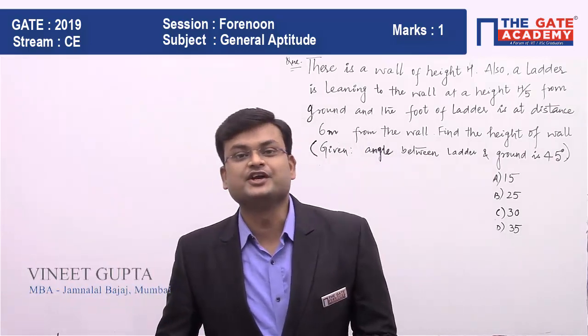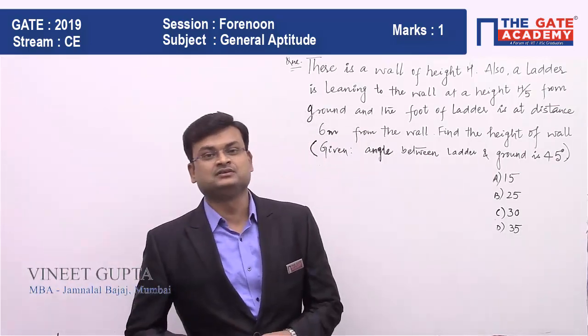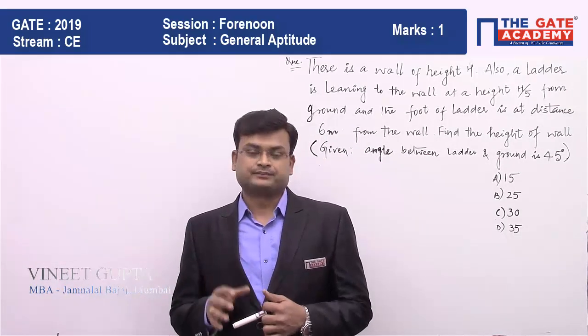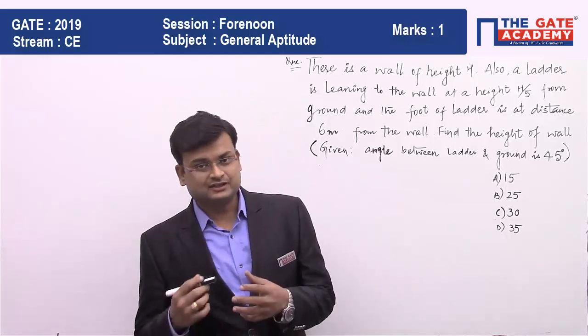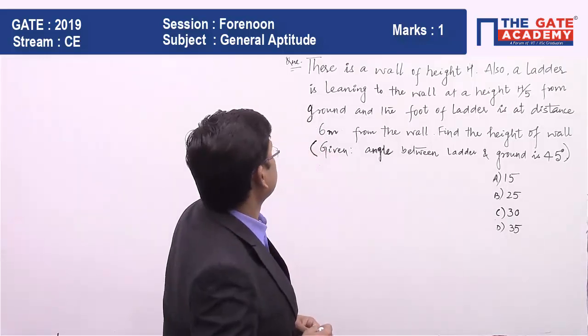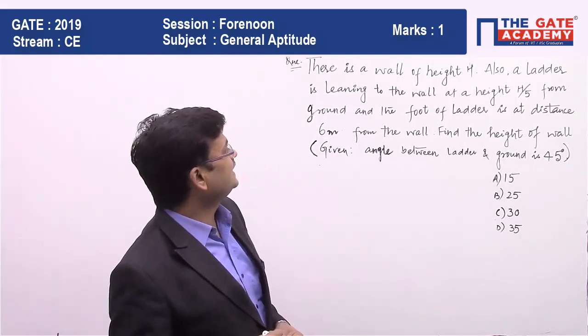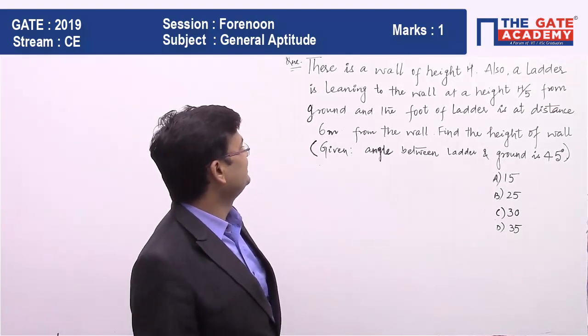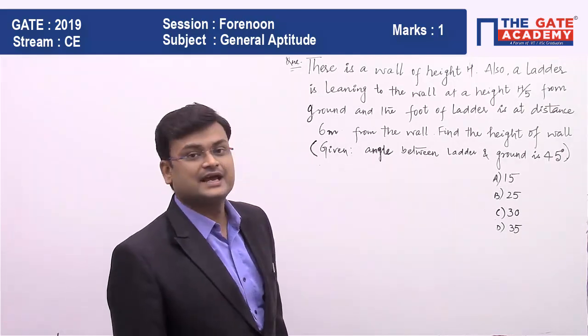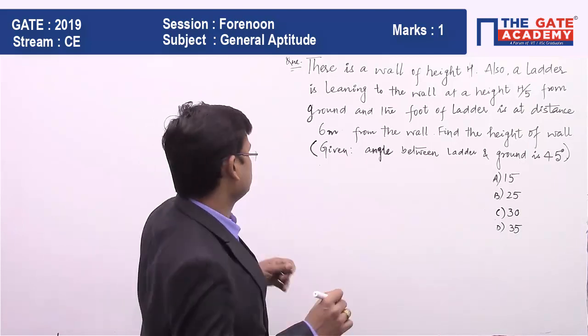In this video we'll be solving a general aptitude question from geometry. So let's read out the question. There is a wall of height h, also a ladder is leaning to the wall at height h by 5. So let me make a diagram for you so that we can understand this question better.